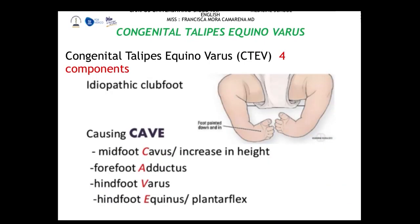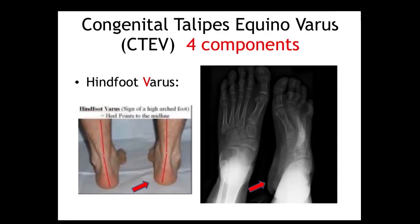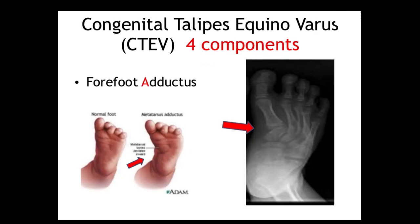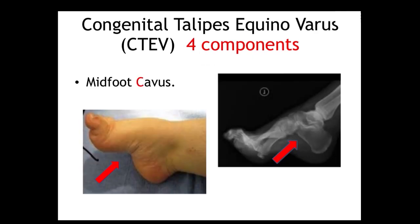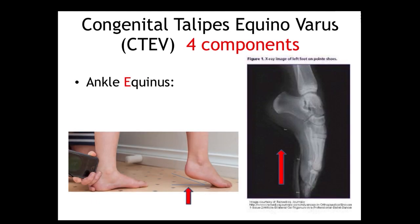The four components of congenital talipes equinovarus to remember are: hindfoot varus, forefoot adductus, midfoot cavus, and ankle equinus.